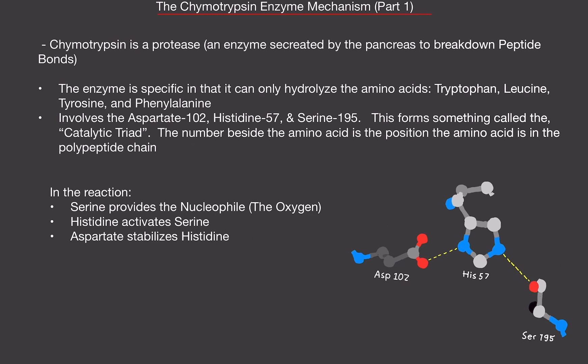Your pancreas secretes chymotrypsin. Your pancreas actually secretes a lot of types of enzymes, and one of them happens to be chymotrypsin. So chymotrypsin is an enzyme that's very specific, in that it can only hydrolyze the amino acids tryptophan, leucine, tyrosine, and phenylalanine. Notice that a lot of these amino acids I just listed have rings in them. So chymotrypsin likes to break down amino acids with rings in it.